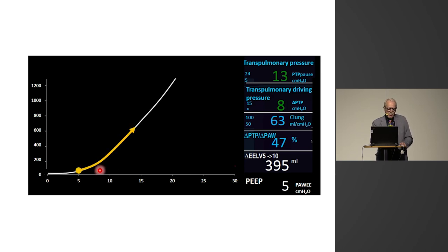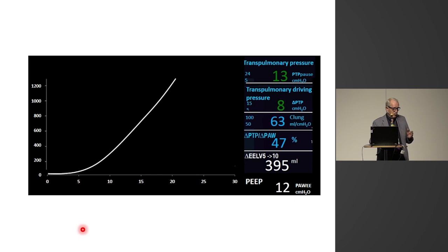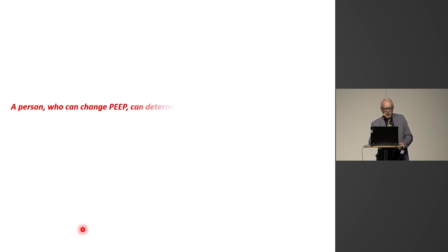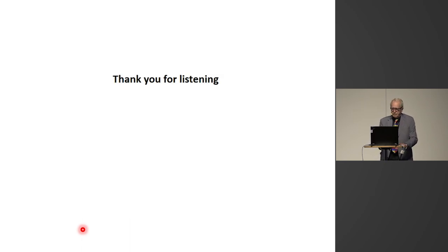For example, at 5 in PEEP, this corresponds to a tidal volume of about 500 milliliters. If we change to 12 in PEEP, this tidal curve will move up on the lung PV curve. This means that after this short procedure, we can predict what happens when you change tidal volume or PEEP in a patient. This procedure is so easy that anyone who can change PEEP can determine and monitor transpulmonary pressure. Thank you for listening.